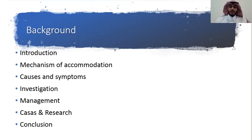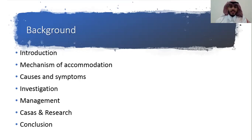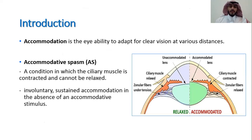What does accommodation mean? Accommodation means the ability of the eye to obtain clear vision at various distances. Accommodation spasm occurs when the ciliary muscle contracts and cannot be relaxed — in other words, sustained accommodation in the absence of an accommodation stimulus.